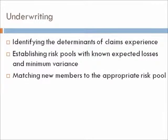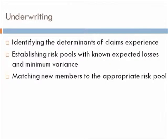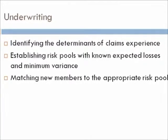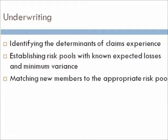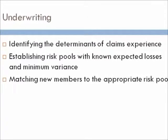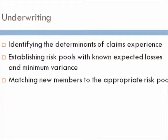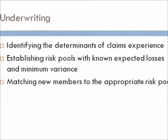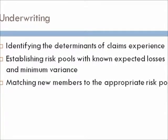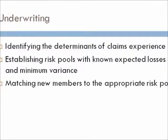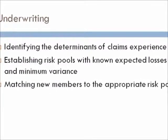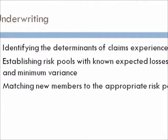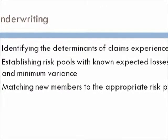Underwriting and rate making are two processes used by insurers to avoid adverse selection. Underwriting involves identifying the determinants of claims experience — such as previous years' claims — establishing risk pools with known expected loss and minimum variance, and matching new members to the appropriate risk pool.